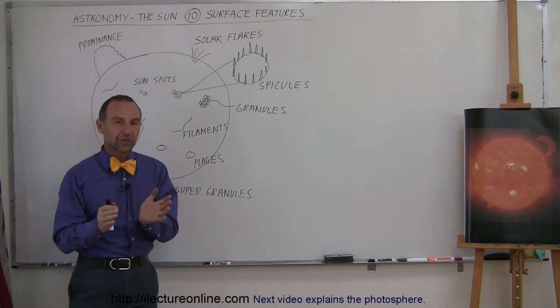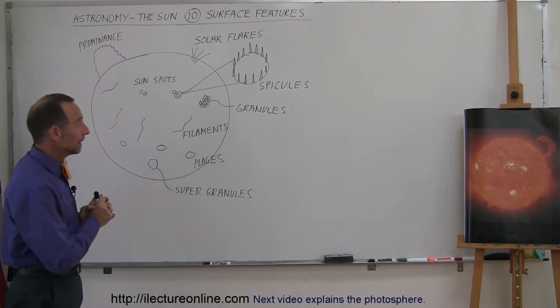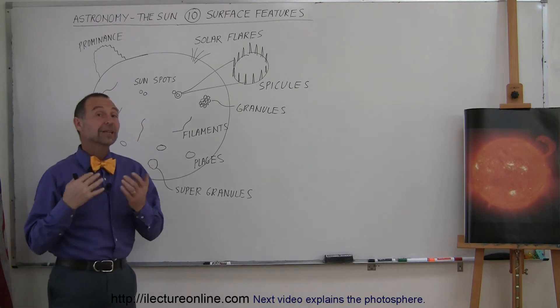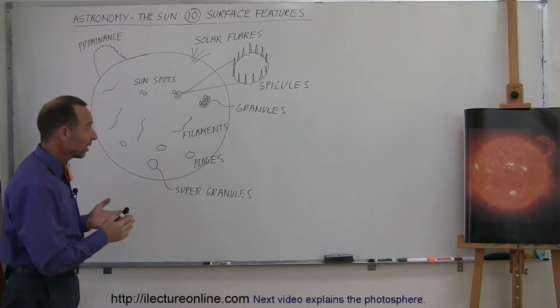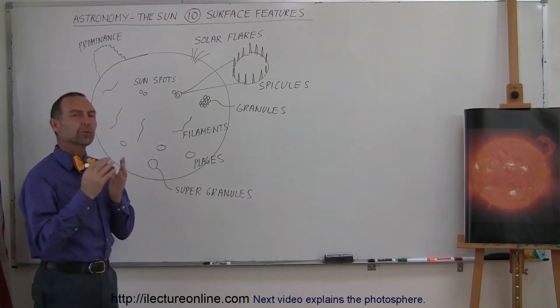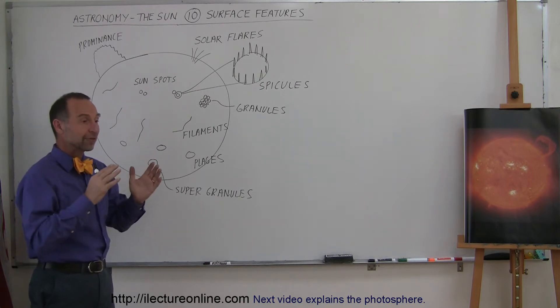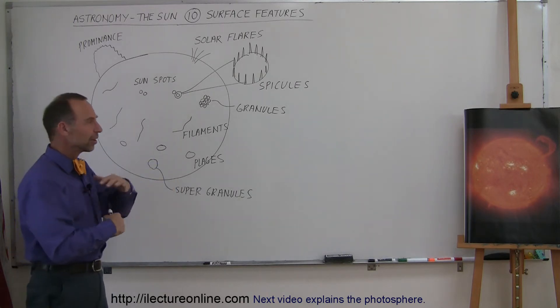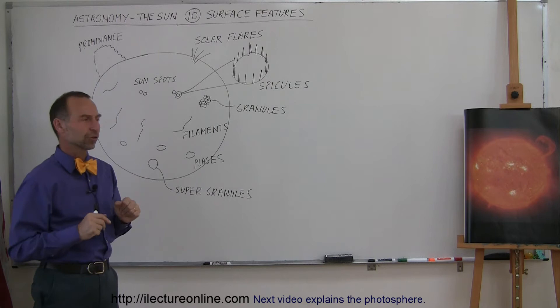Now we're going to talk about some of the surface features on the Sun. The only reason why so many of these surface features actually exist is because of the differential rotation of the Sun, which causes the magnetic field to get all twisted up. And once they get all twisted up, all kinds of things happen at the surface.